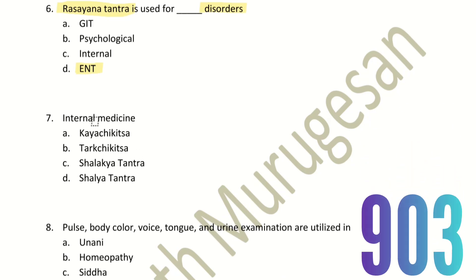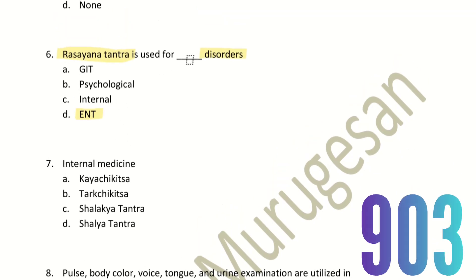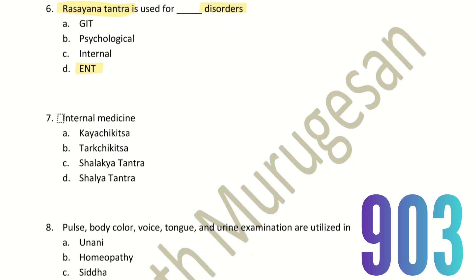Seventh question: Internal medicine. The choices for internal medicine treatment are Kaya Chikisha, Tarchikisha, Shalakya Tantra, and Shalya Tantra. The right answer is Kaya Chikisha.